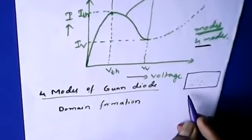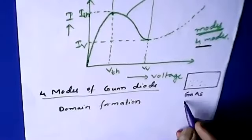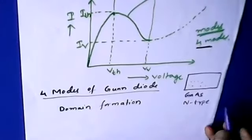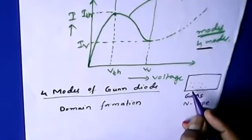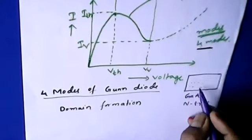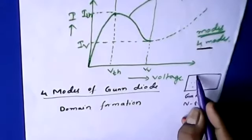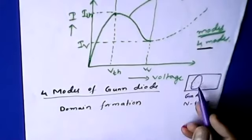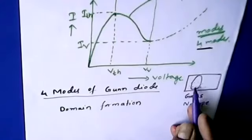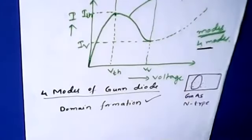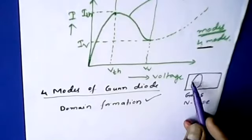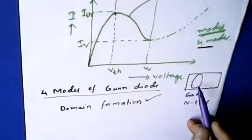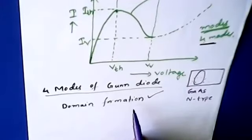Similarly, in the case of the Gunn diode, which uses the compound semiconductor gallium arsenide — specifically N-type gallium arsenide — because of improper doping, a current pulse, or domain, is generated. A domain is formed within the device because of improper doping. This formation of accumulated charges at one place is called domain formation.